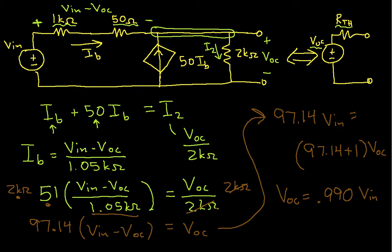So what this says is that my open circuit voltage is 0.99 times my input voltage. So that's good. That's given us VOC.